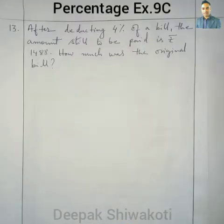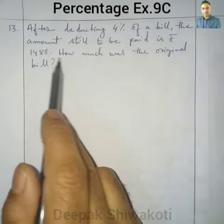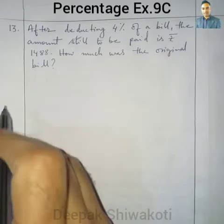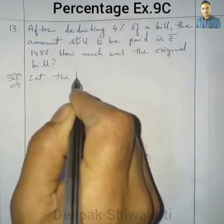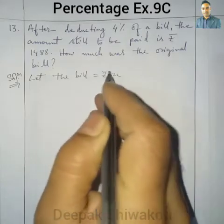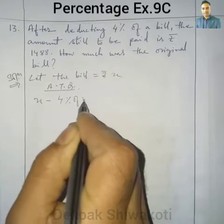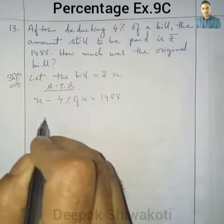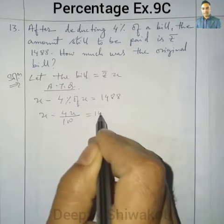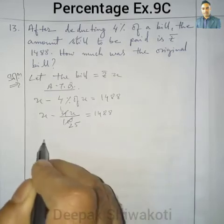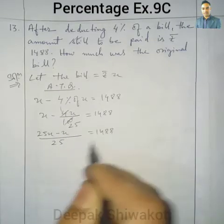Question number 13: After deducting 4 percent of a bill, the amount still to be paid is rupees 1,488. How much was the original bill? Let the bill equal rupees x. According to the question: x minus 4 percent of x equals 1,488. So x minus 4x by 100 equals 1,488. Taking LCM as 25: 25x minus x equals 1,488.